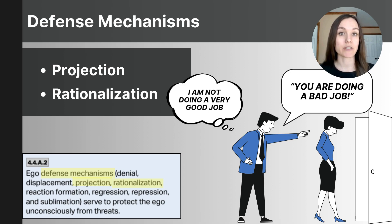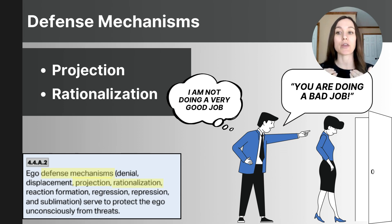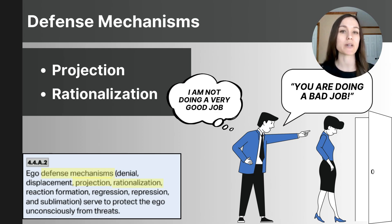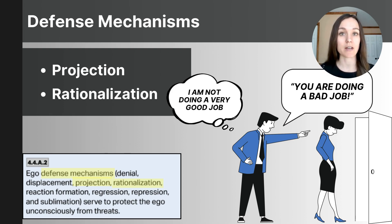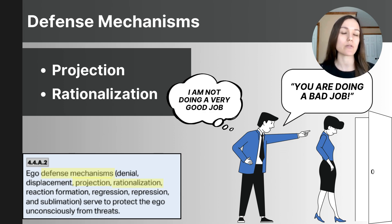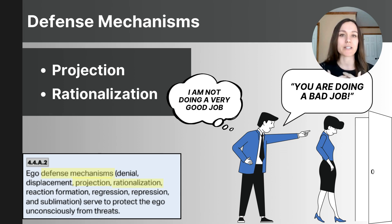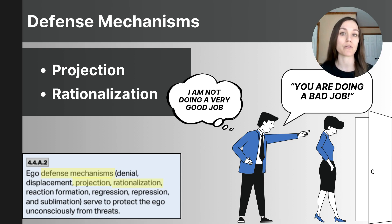Rationalization is a defense mechanism where someone justifies their behaviors or feelings with a seemingly logical reason instead of acknowledging the true cause. For example, when someone doesn't get a job, they might say 'I didn't really want the job anyway' instead of acknowledging their disappointment or considering how to improve their interview skills. This allows them to protect their self-esteem and avoid the uncomfortable truth.